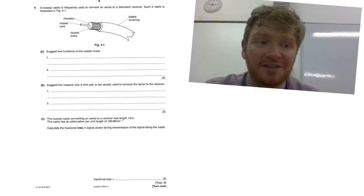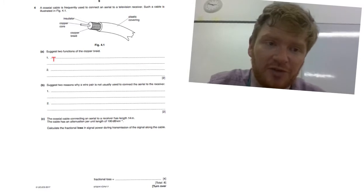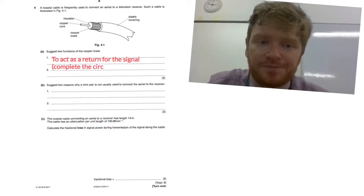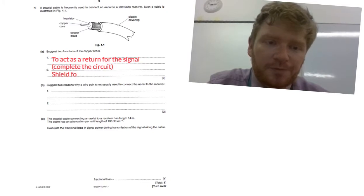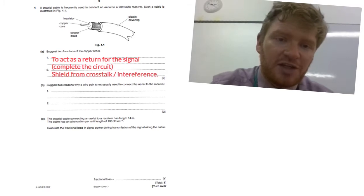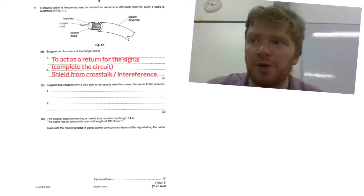Well now this question looks familiar doesn't it. As you can see it's one of those ones that they like to throw in again and again and again, so do spend some time going through the past paper questions because you'll spot these questions coming up over and over again. So the functions of the copper braid: they are to act as a return for the signal or to complete the circuit, and it is also to shield from cross talk or interference. Again, one of the definitions that you just kind of need to learn.